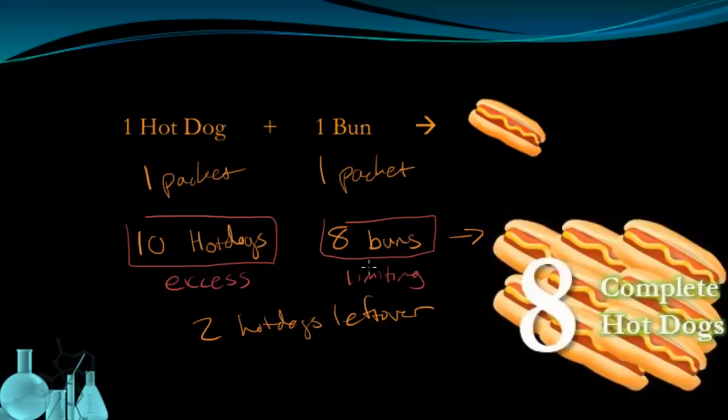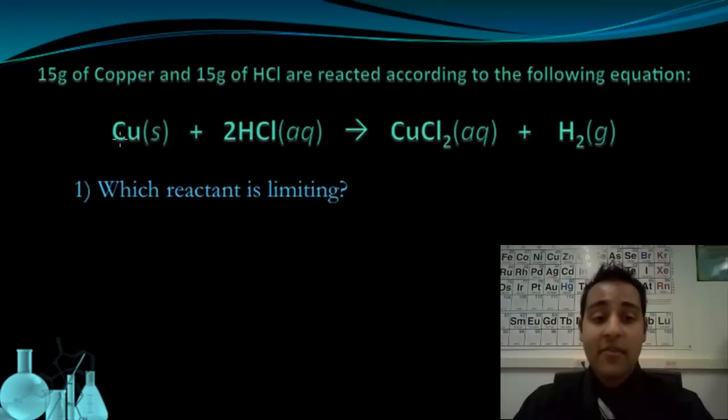We were limited by the number of buns we had for how many hot dogs we can make, and we had an excess of hot dogs. That's why there were two left over. We see this same situation come up in chemical reactions. Here we have the reaction of copper with hydrochloric acid to form copper 2 chloride and hydrogen gas. We're told that 15 grams of copper and 15 grams of hydrochloric acid are reacted.